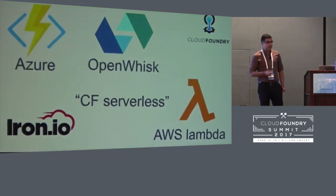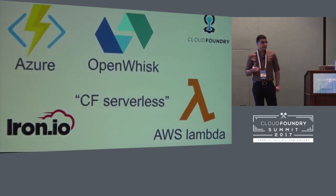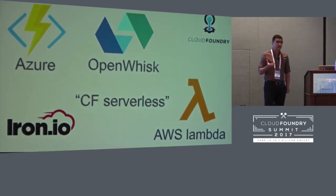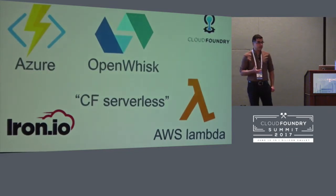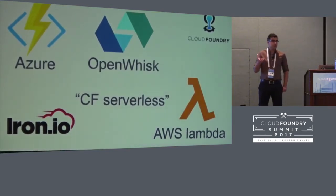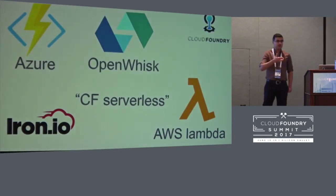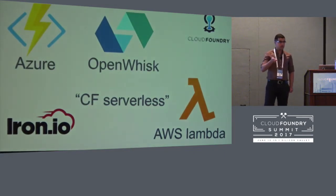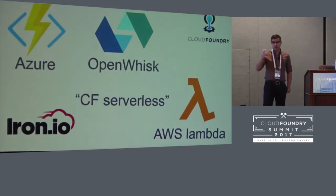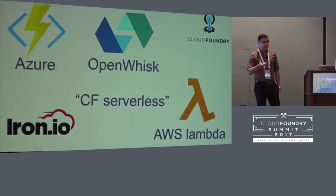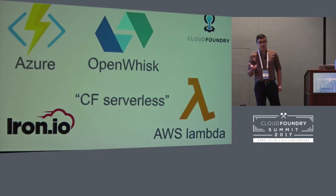We worked with the Bosh team and started coding something that was emulating the behavior of a serverless system. It was basically a CF application that you would push to a Cloud Foundry deployment, and that CF application would manage other applications in the platform. If you have functions, you would define them as typical CF applications. You'd make a call to this manager application that would turn on or off your other CF applications as requests came in.